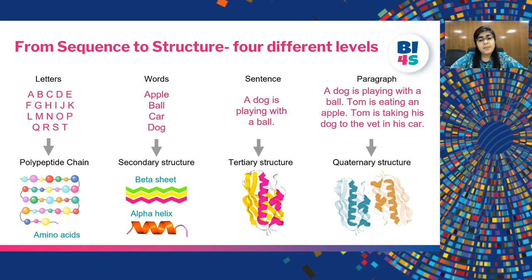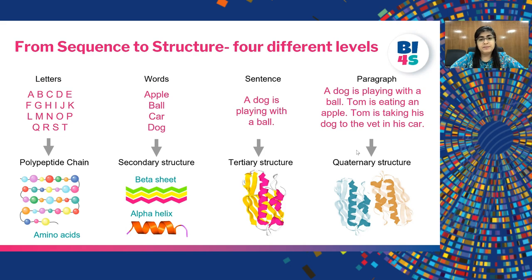In this example you can see blue and brown chains. These two are the two subunits of the protein and together they form the quaternary structure. Let's see each of these four structures in more detail.